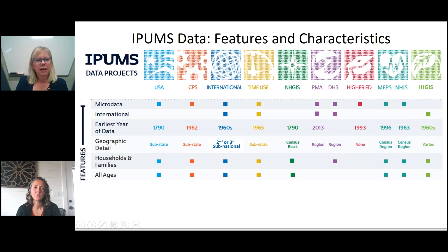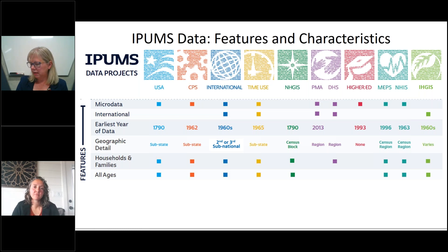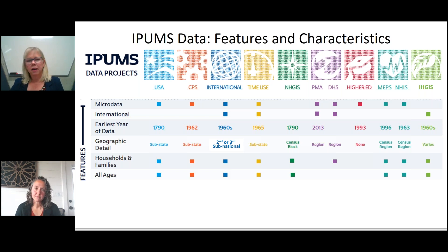This slide details availability of some features of the various data sets. USA and the National Health Geographic Data, NHGIS, provide decennial census and American Community Survey data — USA is microdata and NHGIS is aggregate data — going all the way back to the 1790s, a rich historical collection. The CPS, Current Population Survey, is a U.S. labor force survey that's fielded monthly and includes assorted topical supplements. We started with just one month out of the year but over the years we've added all of the monthly data to that collection.